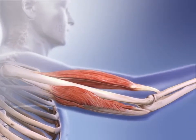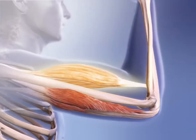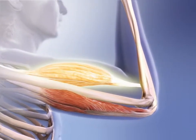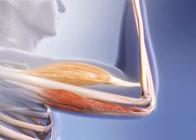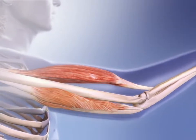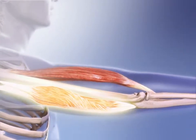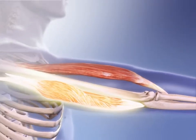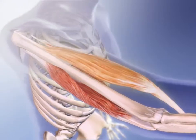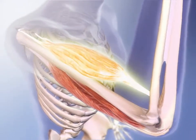A muscle that contracts to generate the main force of an action is called the prime mover, or the agonist for that action. Muscles that perform the paired and opposing action are called the antagonists. The agonists in elbow flexion are the muscles that contract to bring the elbow joint into a flexed position.